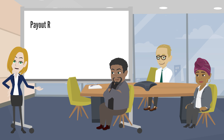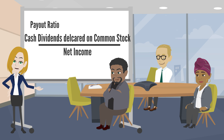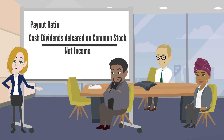The payout ratio measures the percentage of earnings distributed in the form of cash dividends. It is computed by dividing cash dividends declared on common stock by net income.